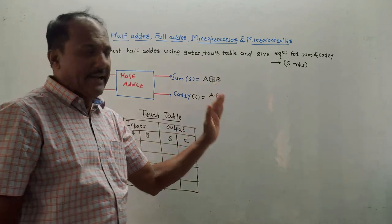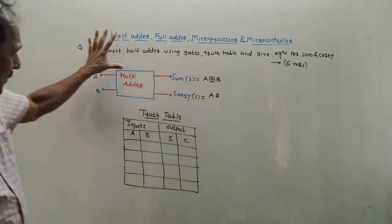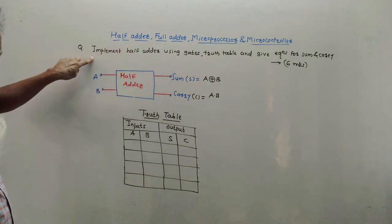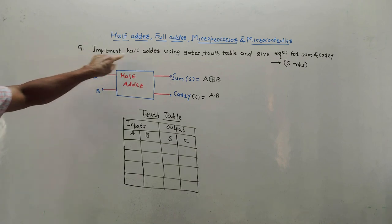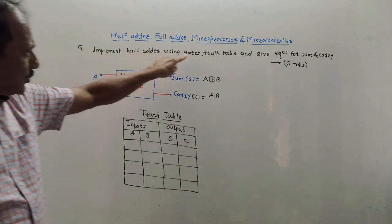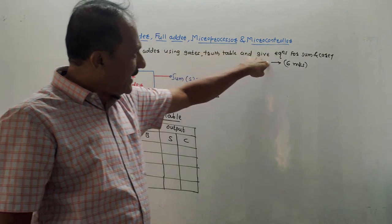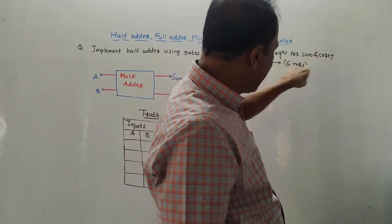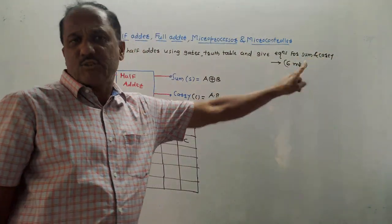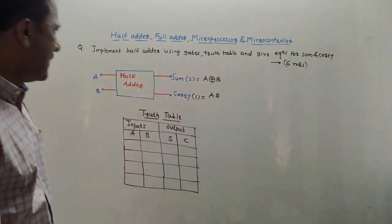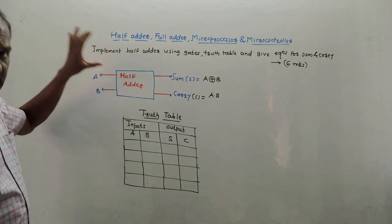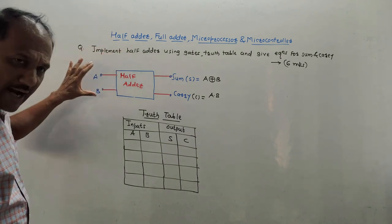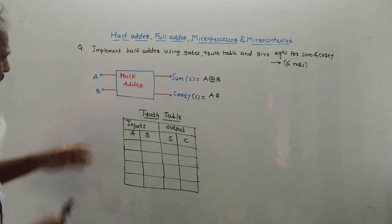So do watch this video till the end. First we will discuss about the half adder. The question related to half adder is: implement half adder using gates, give the truth table and equations for sum and carry. It is usually asked for six marks. Now, what is a half adder? It is a combinational circuit which is used to add two input signals.